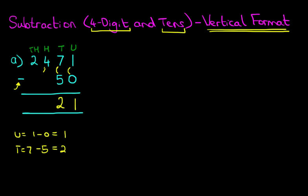We've got the hundreds column. We've got 4 minus 0 — the answer is 4. And lastly, we have the thousands column. 2 minus 0 — the answer is 2. Therefore, the answer is 2421. It's a nice easy one to begin with.